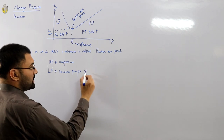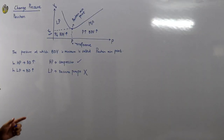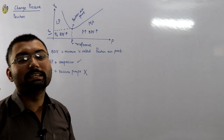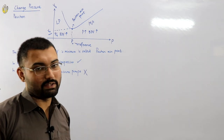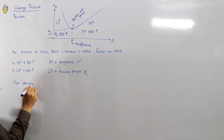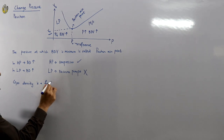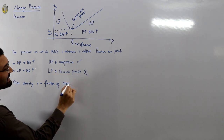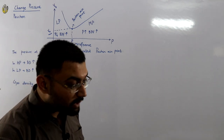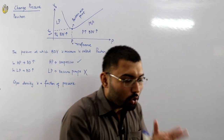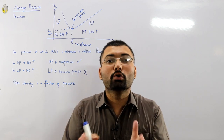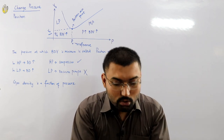Generally we use the high pressure region, which means that if a gas is used at high pressure the breakdown strength increases. Gas density is a function of its pressure, so if pressure is increased the gas density increases, meaning the gas molecules are so densely packed.